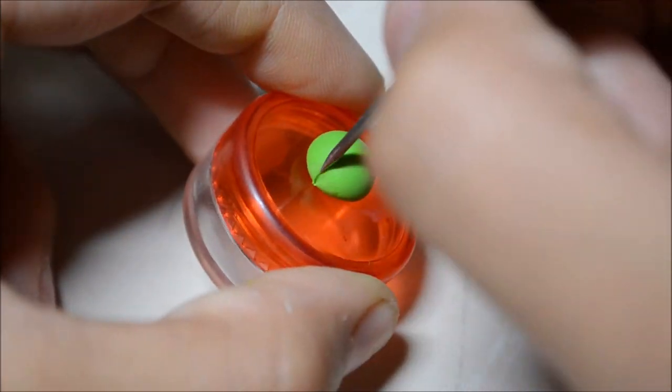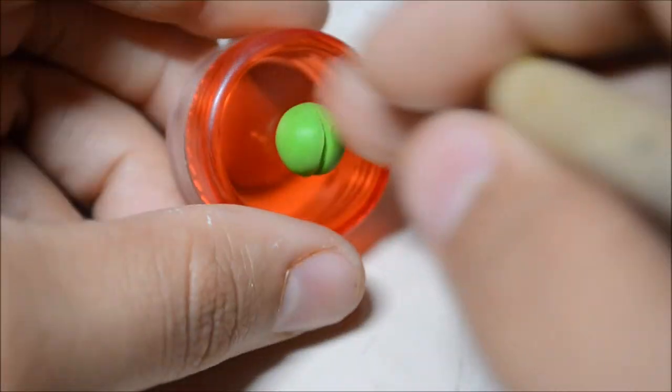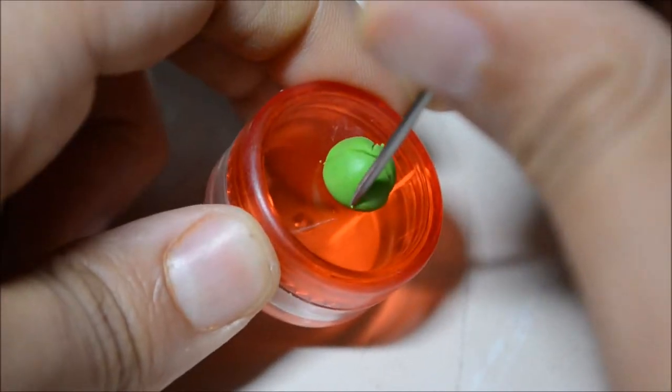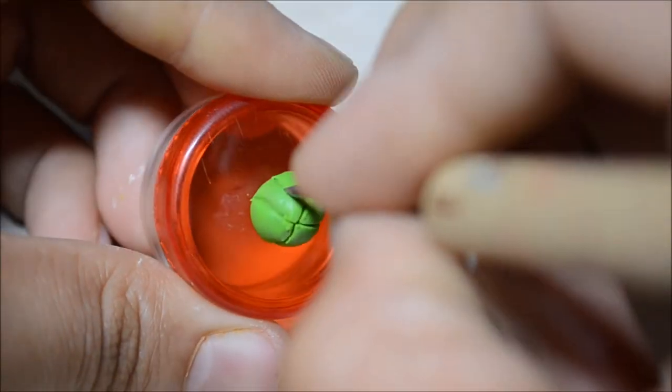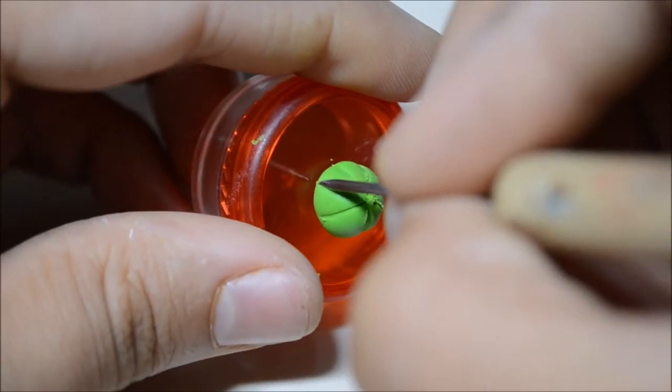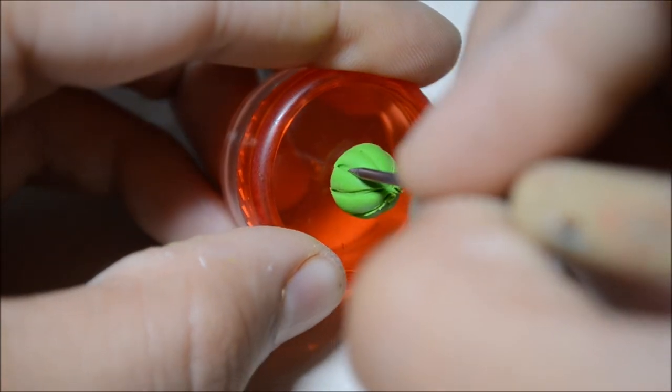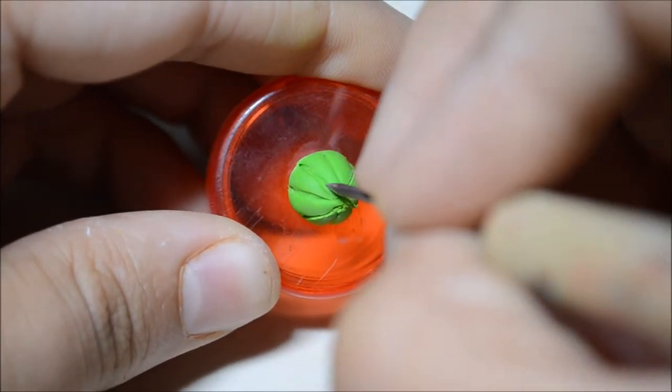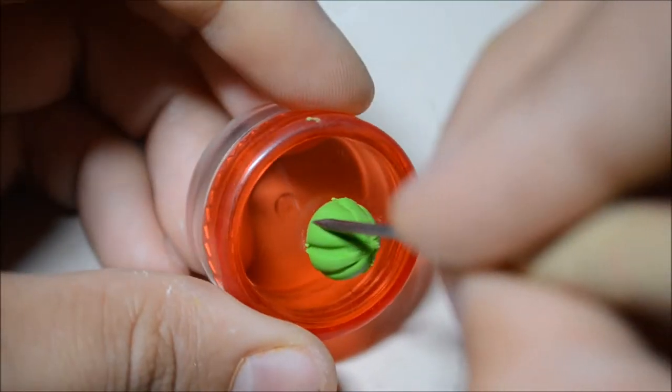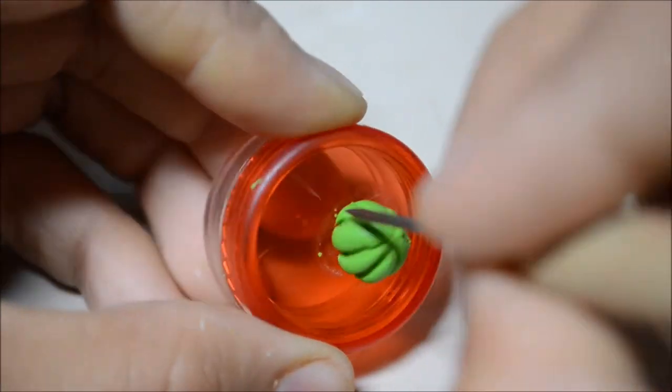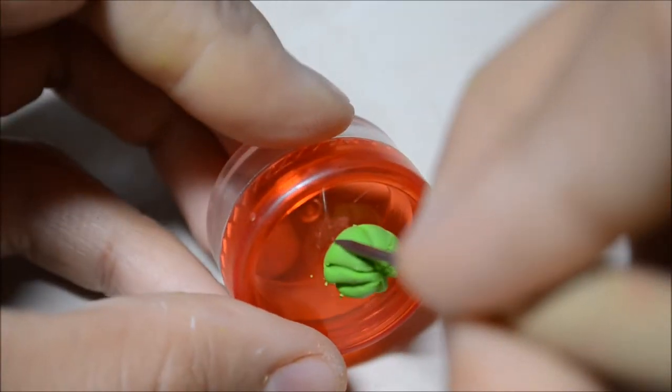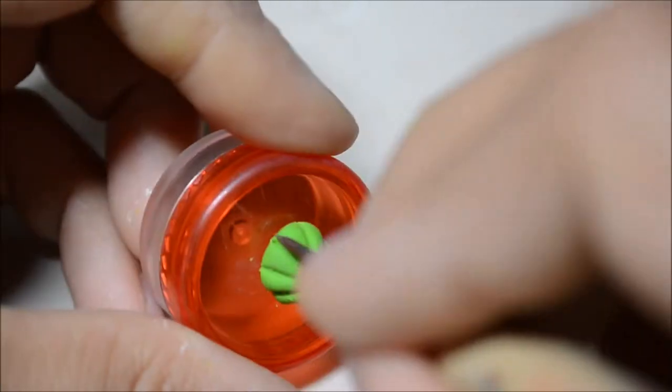So now I'm just going to make the little cactus. The first time around, I'm just marking the little lines. And the second time, I'm actually going a little deeper, making each section a little more defined.